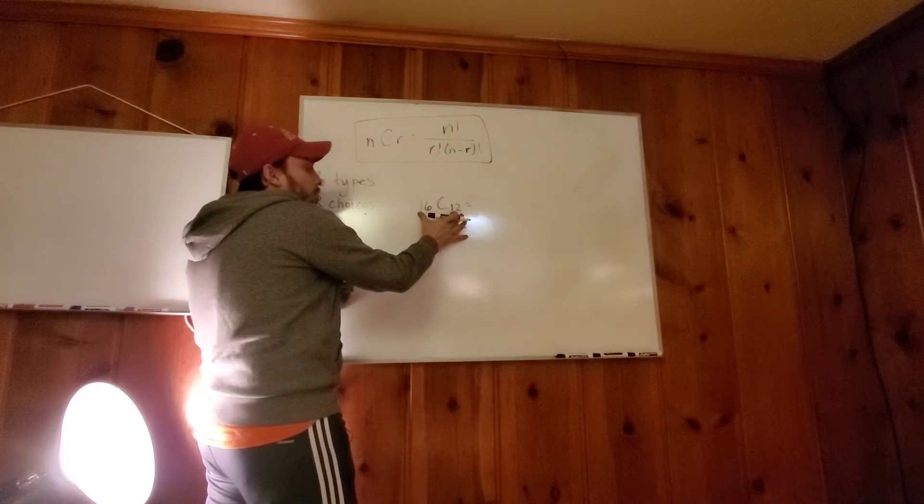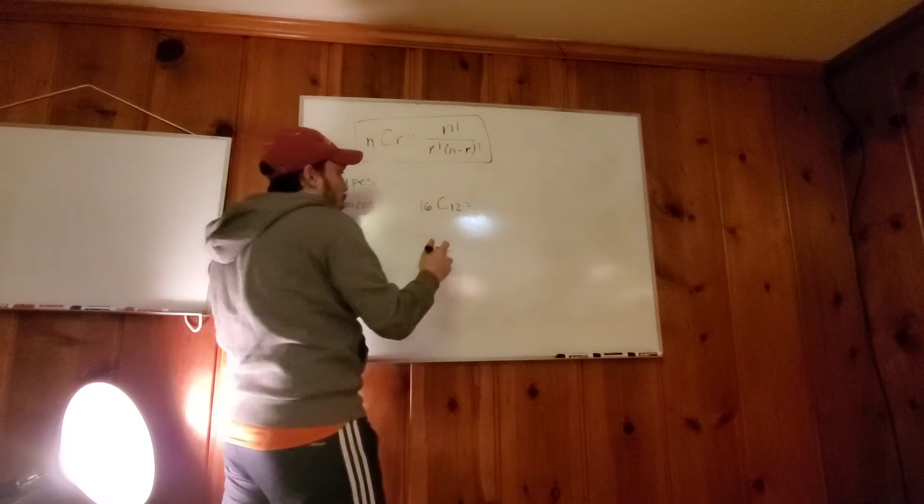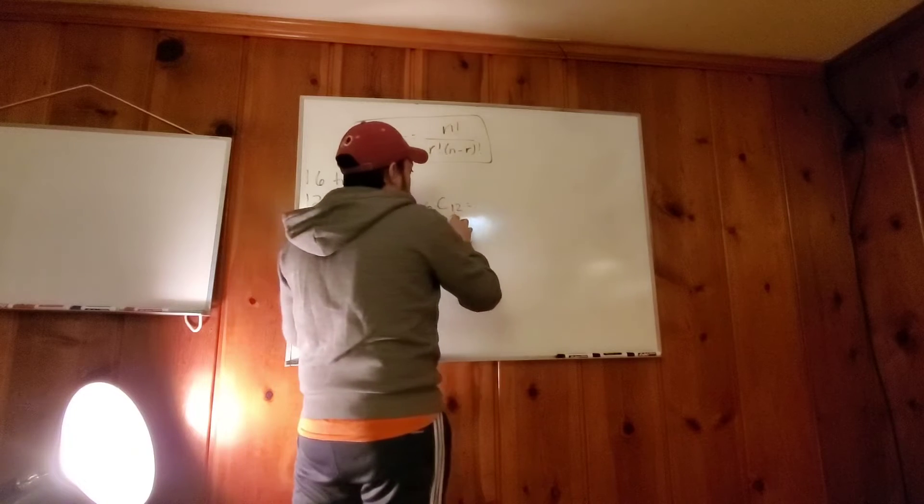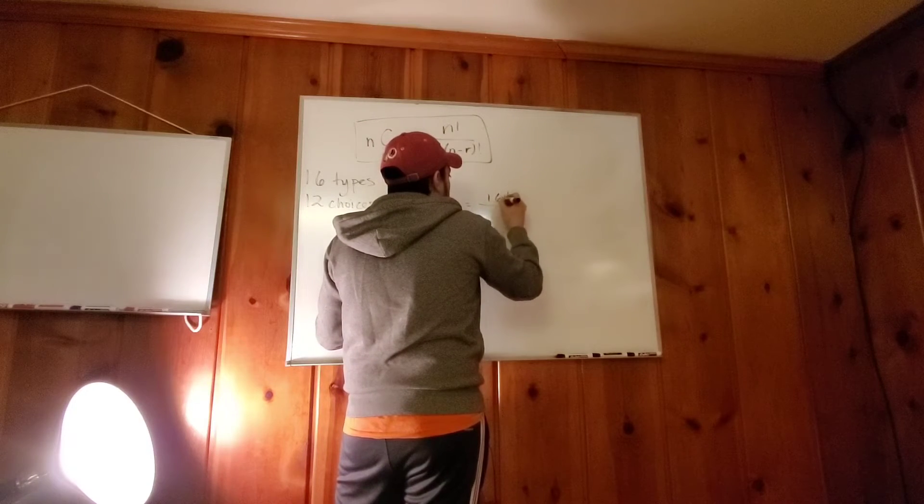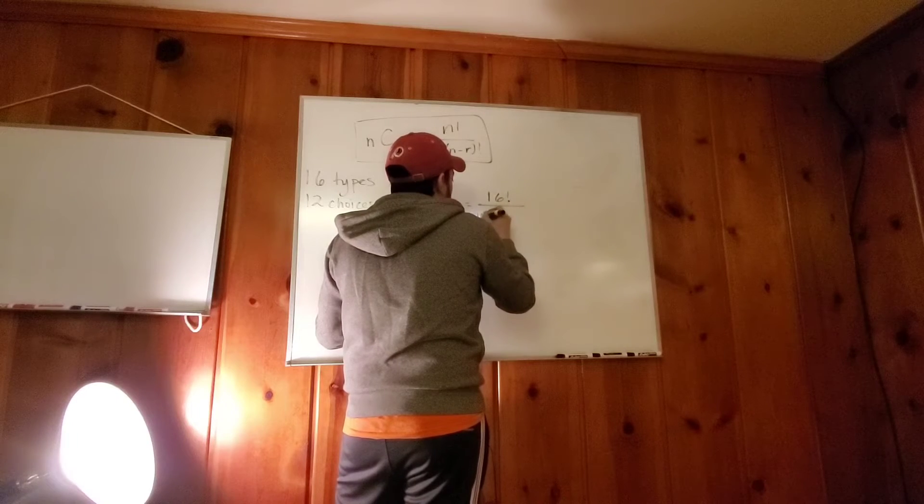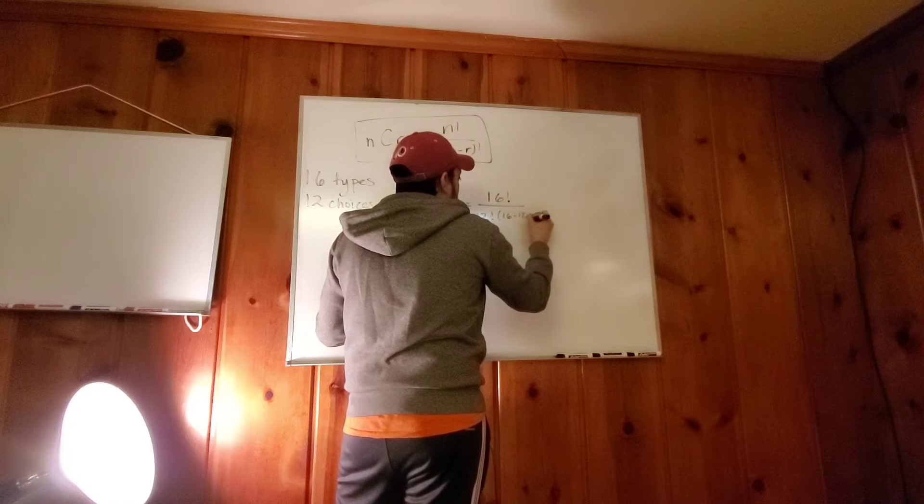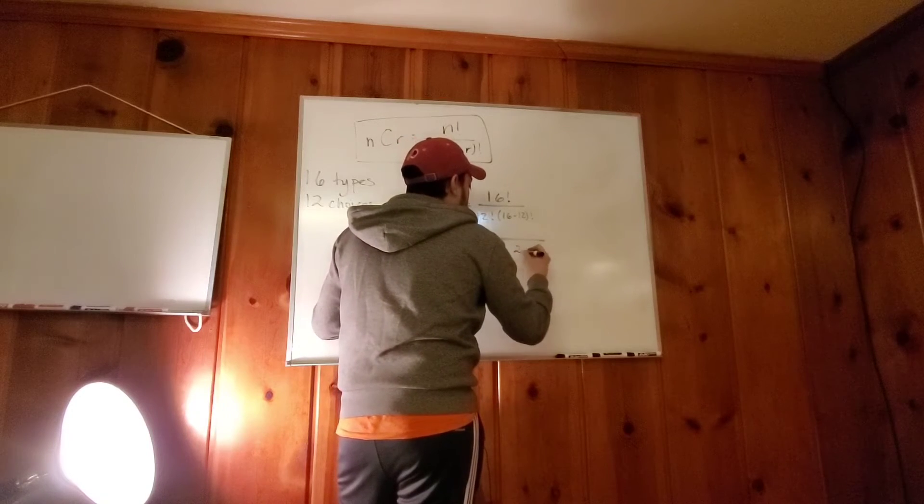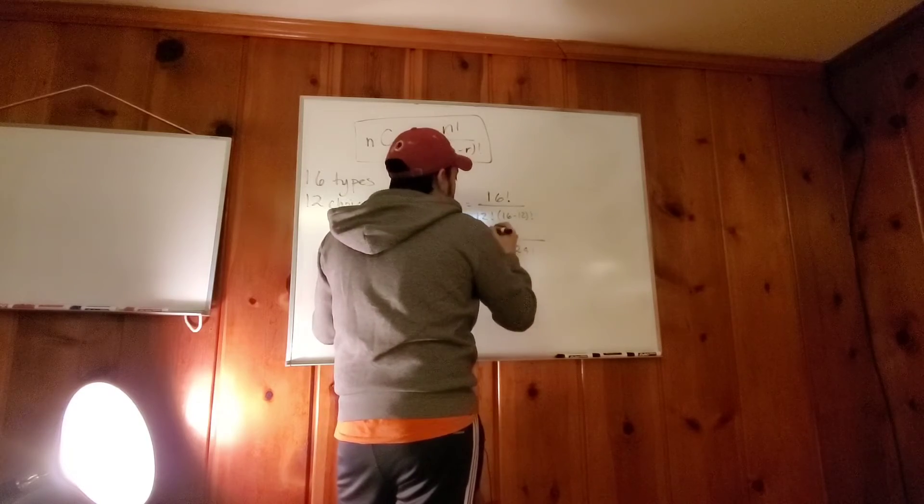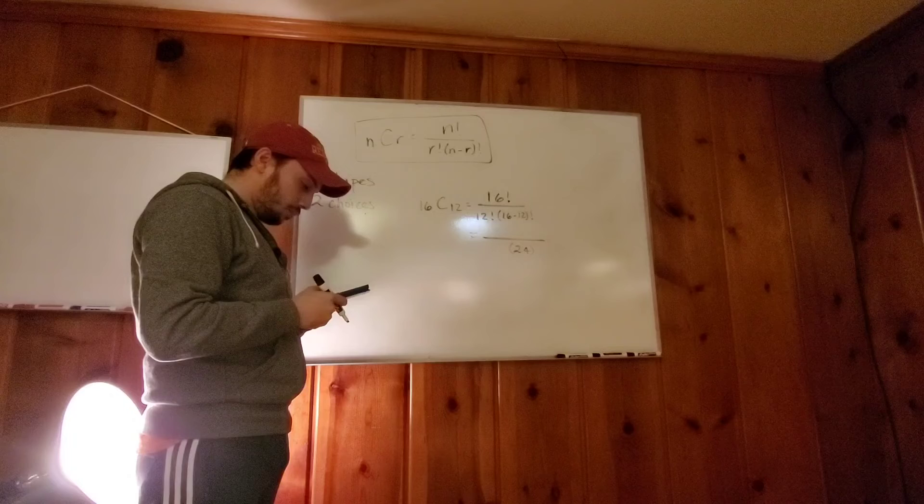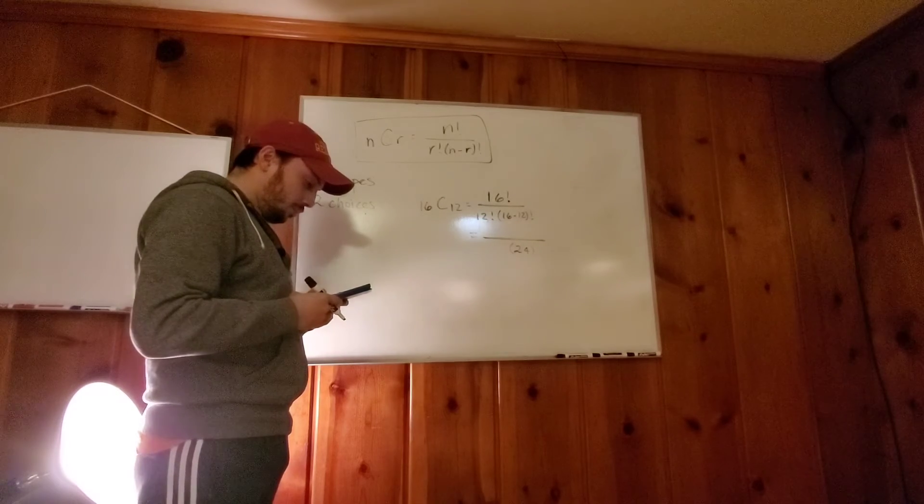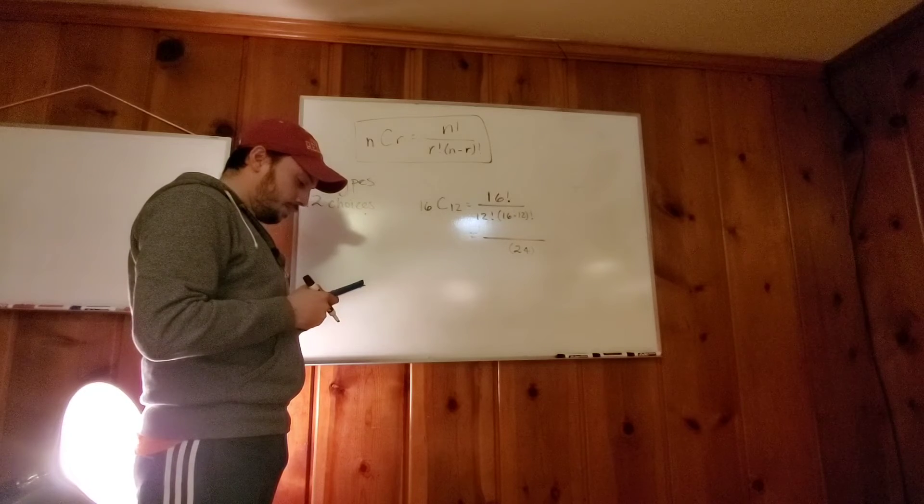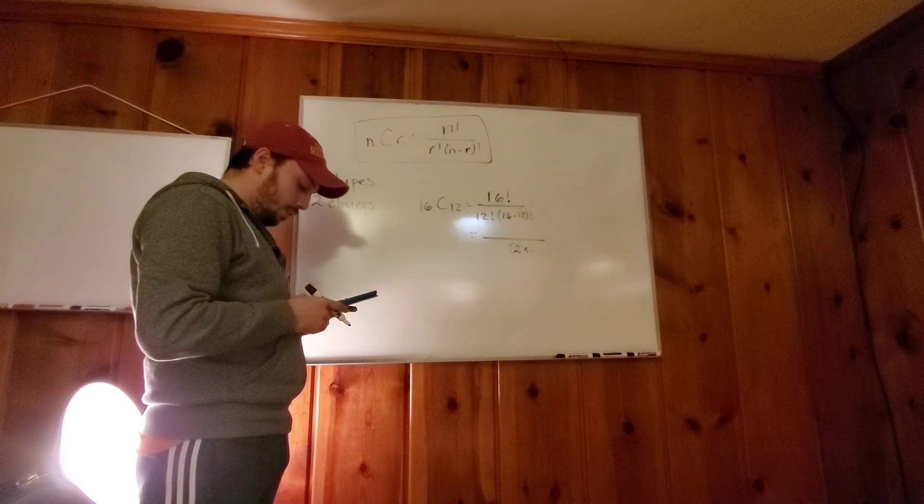So it says 16 C 12. This is just a very good way to keep track of which is N and which is R. N is before the C and R is after the C. The same thing when we do permutations. N is before the P, R is after the P. So then we're going to have 16 factorial over 12 factorial and 16 minus 12 factorial, which is 4 factorial, which is 24. So it's 24 and 12 factorial is. Yeah. Let's just do it the long way because I already know how to do it anyway here.